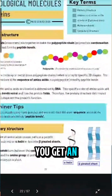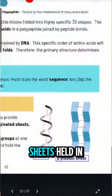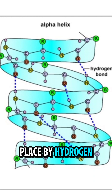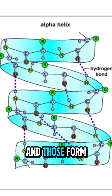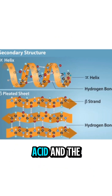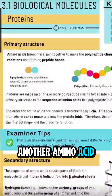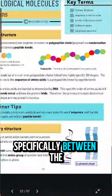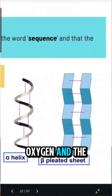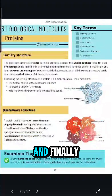In the secondary structure you get an alpha helix or beta pleated sheets, held in place by hydrogen bonds. Those form between the carboxyl group of one amino acid and the amine group of another amino acid, specifically between the oxygen and the hydrogen atoms.